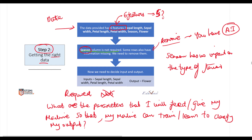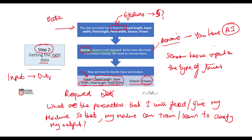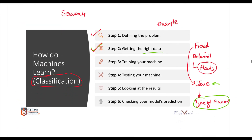To complete step two, we have to decide what parameters to feed our machine so it can train and learn to classify the output. Based on our decision, sepal length, sepal width, petal length, and petal width will be the inputs, and the output will be the flower type. In AI, deciding what is your input and what is your output is very important.